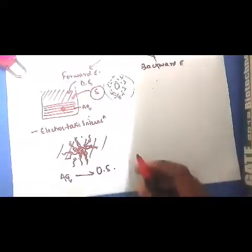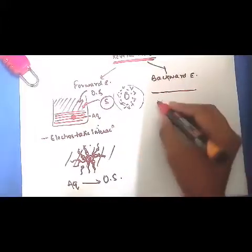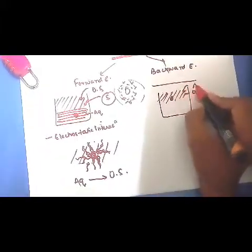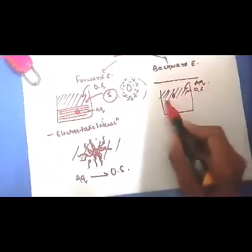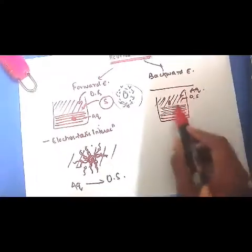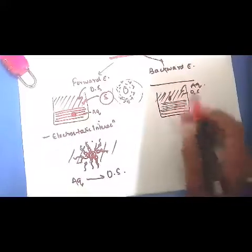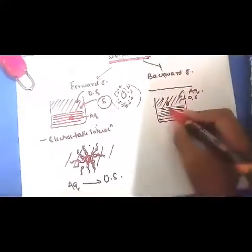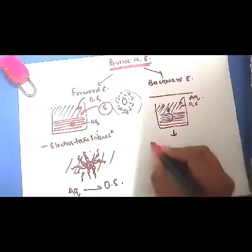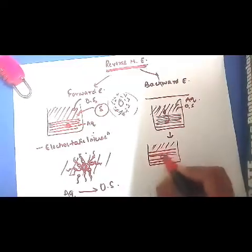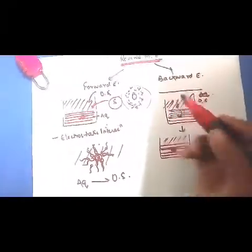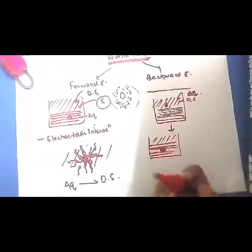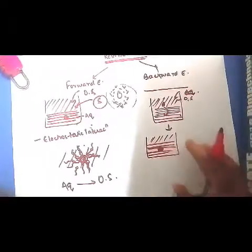For stabilizing the protein, we perform backward extraction. I already have the protein in the organic solvent. Now we add a new aqueous solution to it — a new aqueous solution, specifically a salt-based aqueous phase. The aqueous solution settles at the bottom. Due to electrostatic interaction, since protein is much more interactive with the aqueous phase and gets stabilized by water molecules, my protein retrieves back into the aqueous phase. By the end of backward extraction, the protein gets back into the aqueous phase.